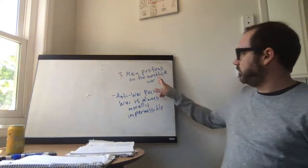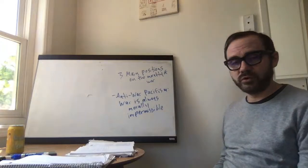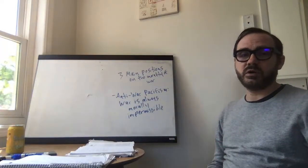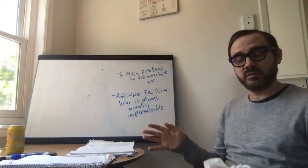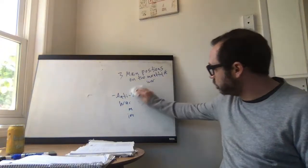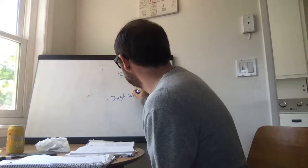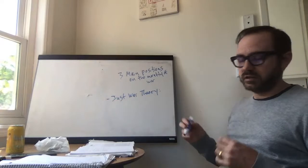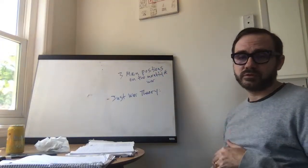We've talked about two of the three main positions on the morality of war. The third is probably the biggest — it has the most academic and historical support because it's an intermediate position. It's neither 'war is always wrong' nor 'there's nothing to criticize about war.' It says some wars are permissible and some are not, on a case-by-case basis depending on whether a war satisfies certain stated conditions. This third position is known as just war theory.